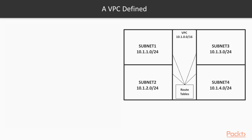A VPC really is the house, and it's described using an IP range. In this case, it's 10.1 — so anything beginning 10.1 in this account belongs to this VPC. You then break that 10.1 address range into four flats or four subnets: 10.1.1 for subnet one, 10.1.4 for subnet four. Everything can talk to each other through a route table, and the route table also allows you to talk outside of the house.